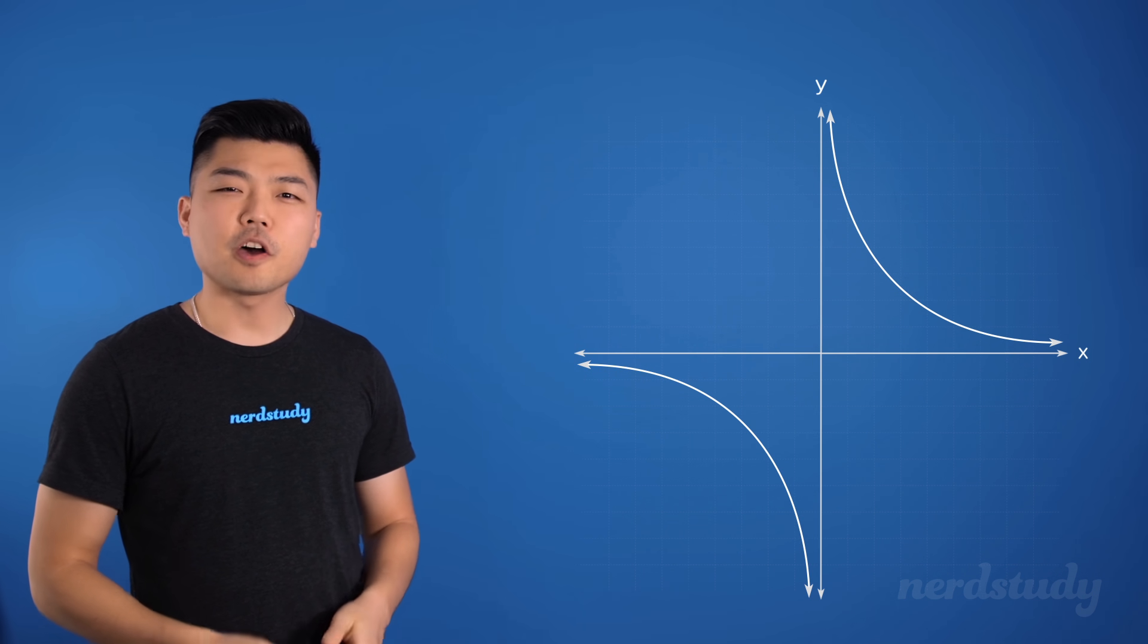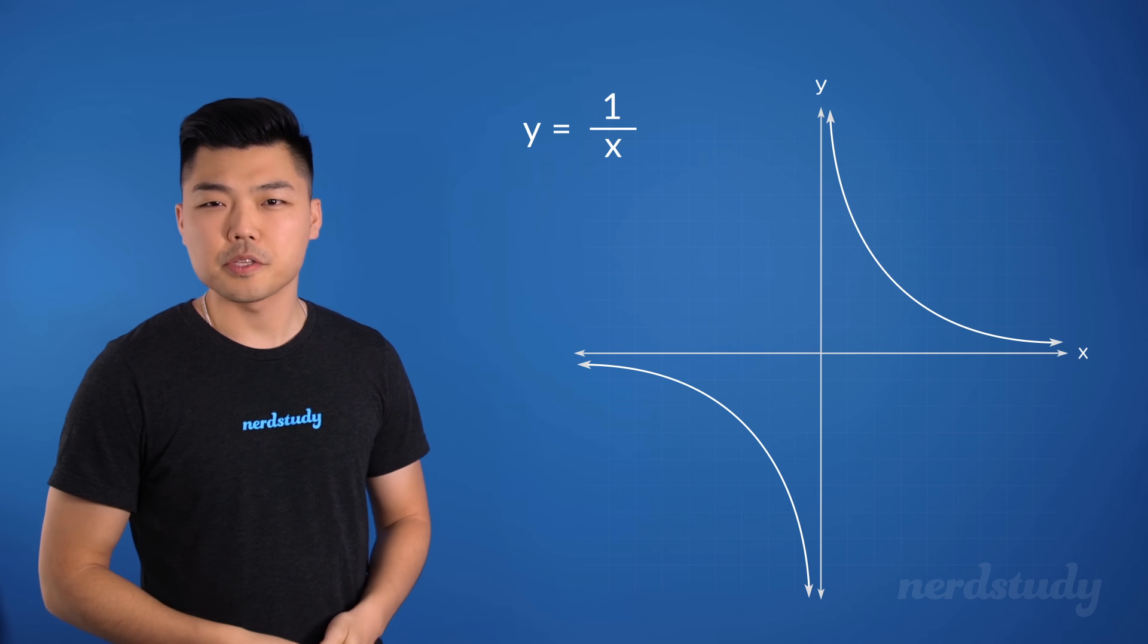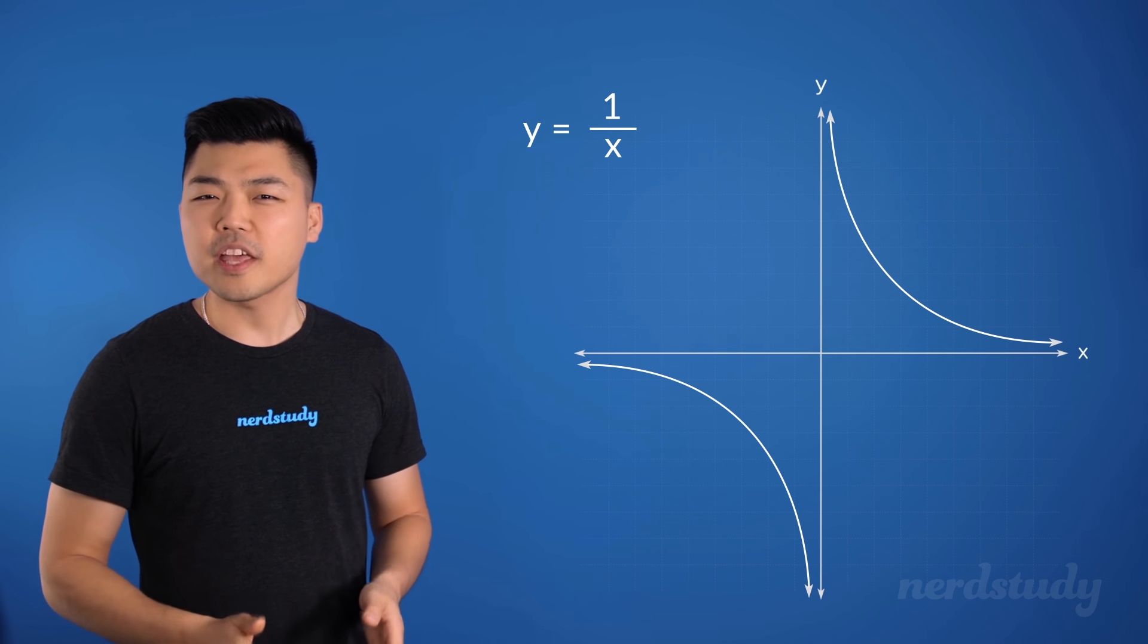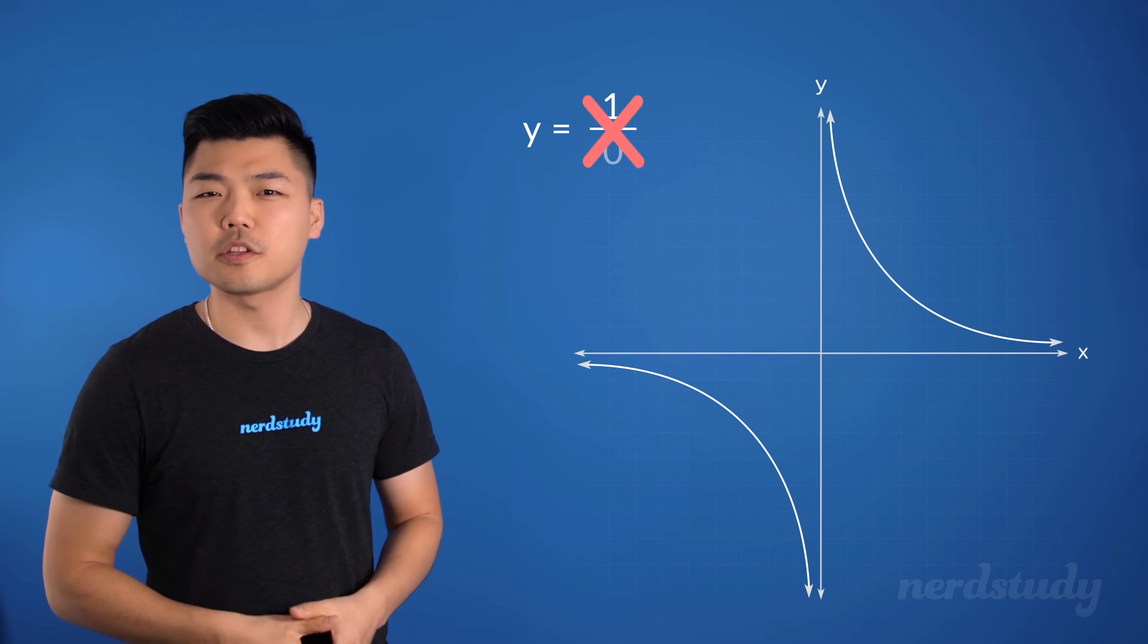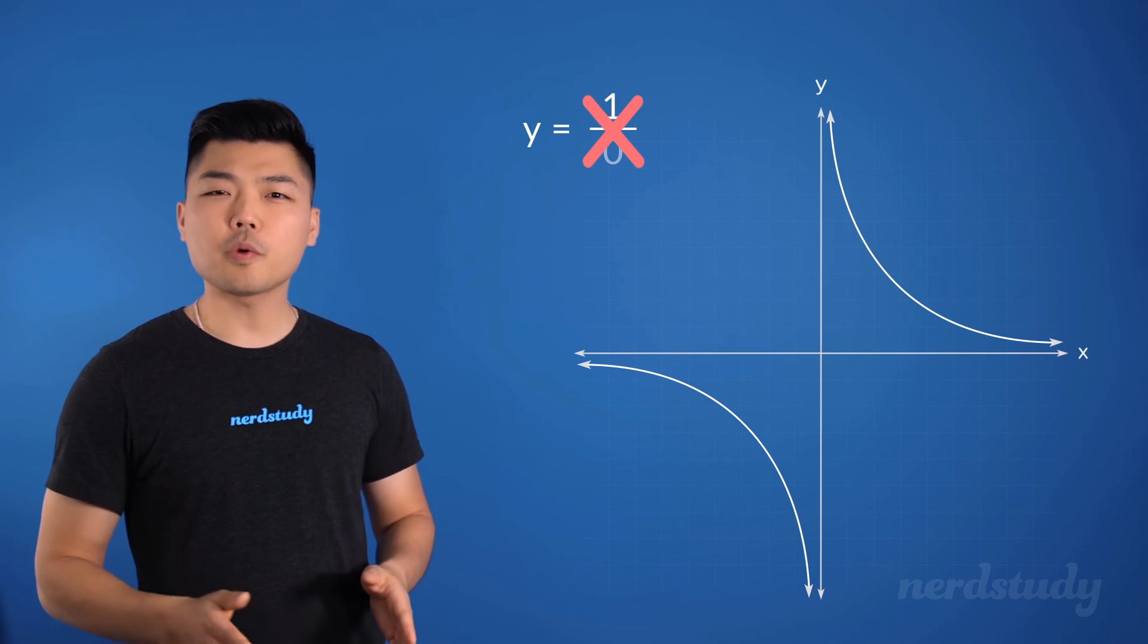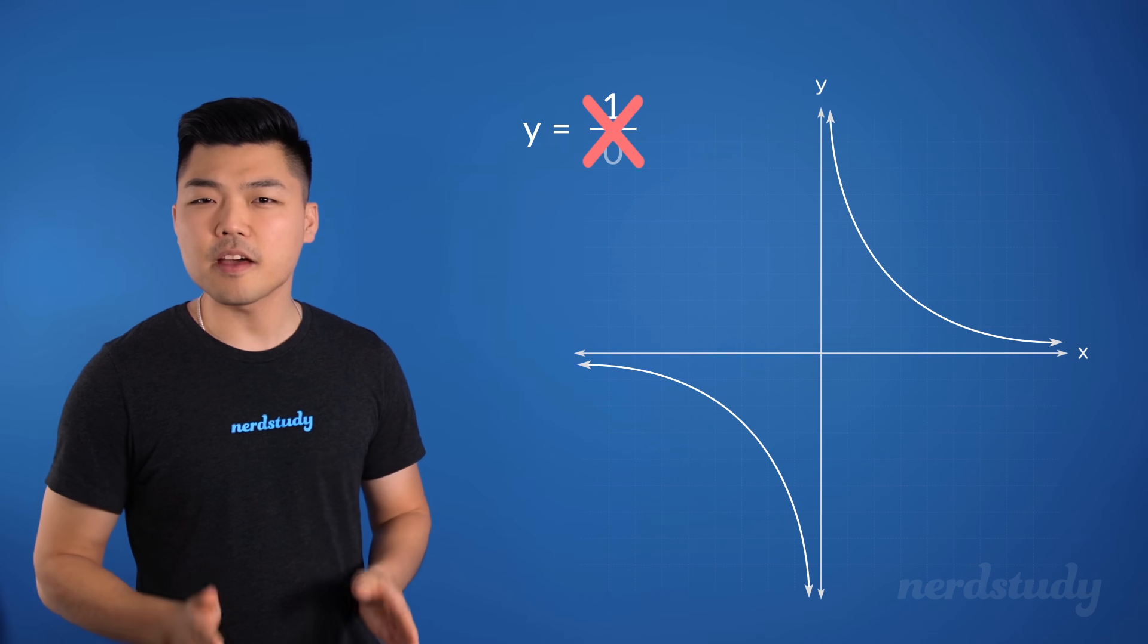over here? We've got y equals 1 over x. And we already know that we cannot have a 0 on the denominator of a fraction. So we know right away that since x can never be 0,